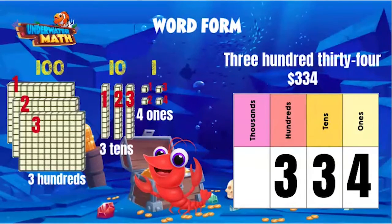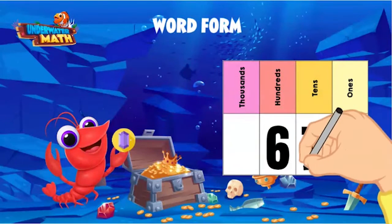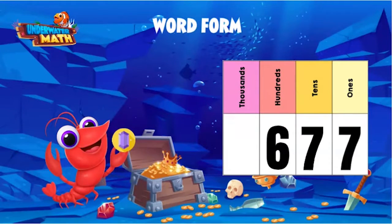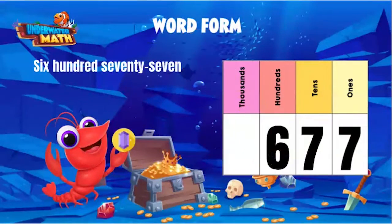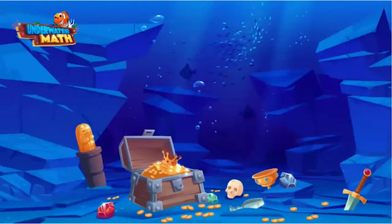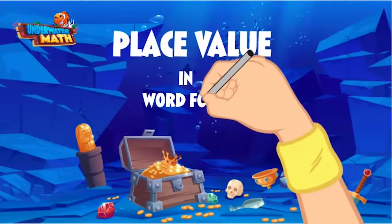Thanks for helping me — let's do another! I found a gemstone. If I add it to the treasure, I wonder what the value of the gold would be. I bet the value would be around 677. How would we write this amount in word form? You can do it — say the number as I write it: 677. The value of the gold would be around six hundred seventy-seven.